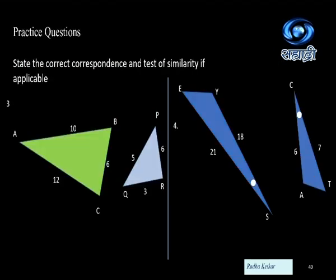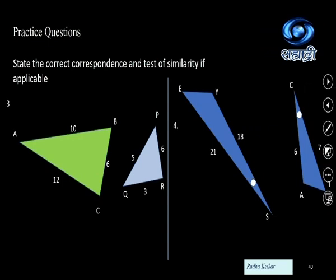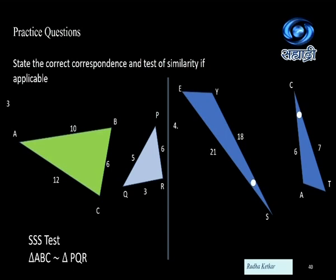In the third example, sides AB and PQ, BC and QR, and AC and PR are considered. Taking the sides in this sequence, we find there is the same ratio throughout. So triangle ABC and triangle PQR are similar to one another by the side side side test.